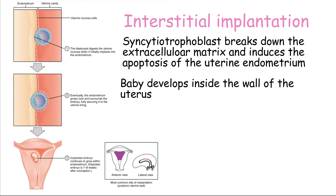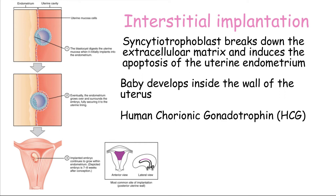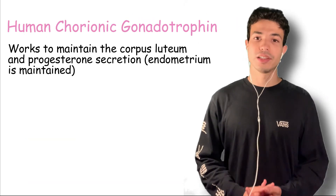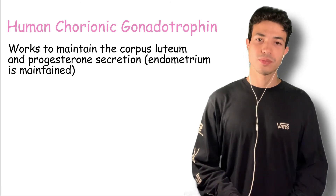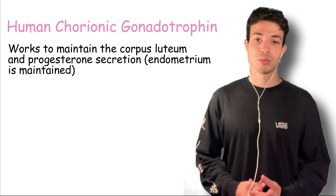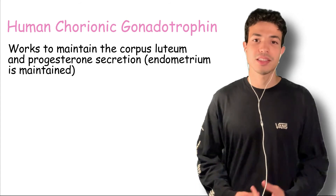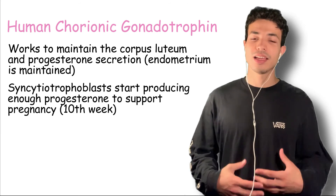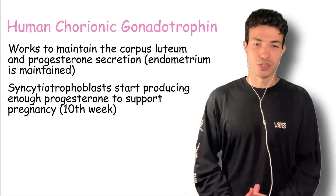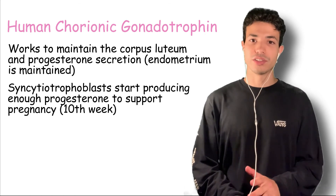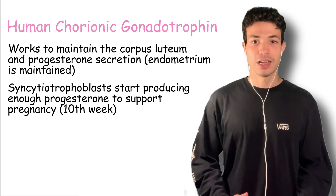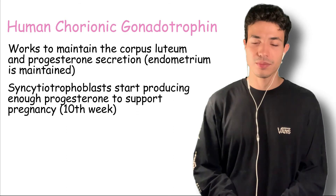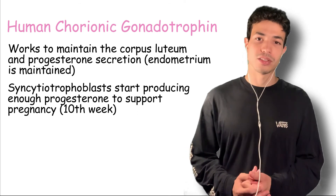The endocrine function of the syncytiotrophoblast begins with the onset of implantation when we get the production of human chorionic gonadotrophin, or HCG — which is the hormone picked up in pregnancy tests. HCG works to maintain the corpus luteum and progesterone secretion so that the endometrium is maintained and capable of supporting pregnancy. As the embryo develops, the syncytiotrophoblast gains the ability to produce enough progesterone to support pregnancy on its own without the corpus luteum, which occurs around the 10th week of gestation.